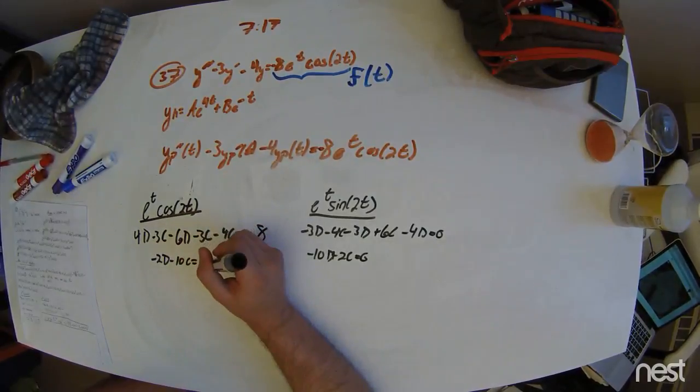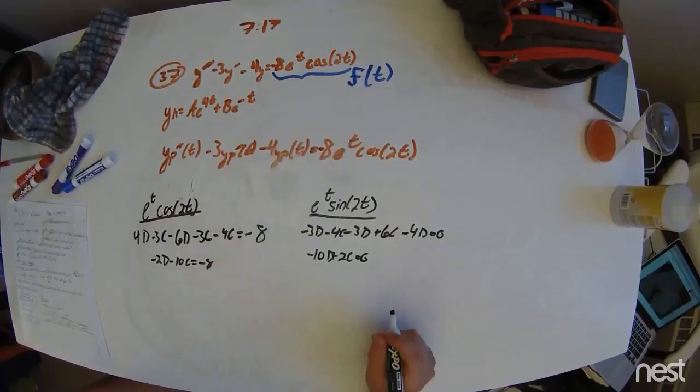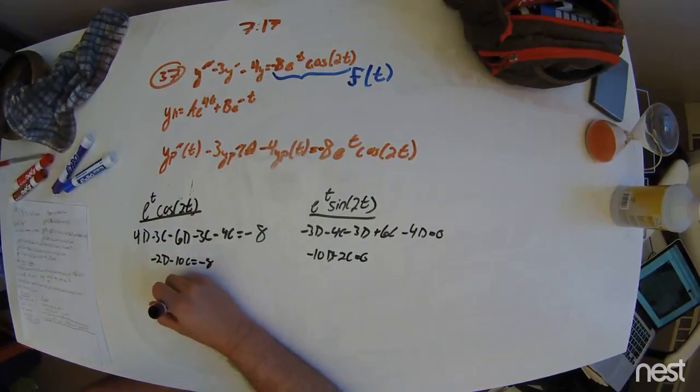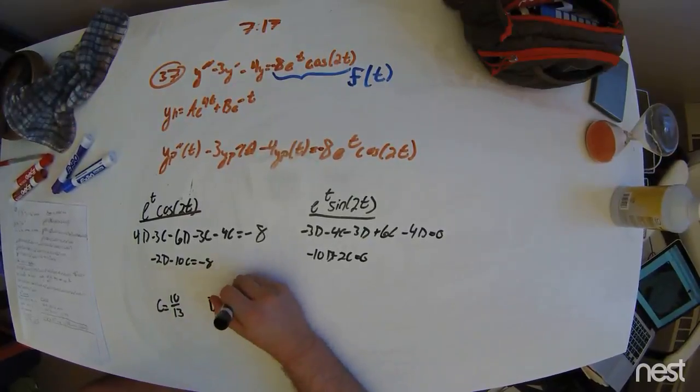Solve for c and d, take some algebra. However, after some work, you get c is 10 thirteenths and d is 2 thirteenths.